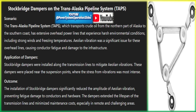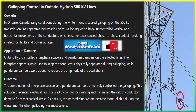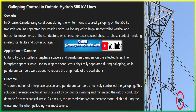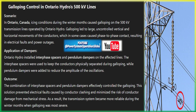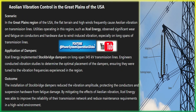Dampers help to extend the lifespan of conductors, clamps, insulators, and other line hardware by preventing wear and tear from vibrations. This reduces the frequency and cost of maintenance, as fewer conductor repairs or replacements are needed. By minimizing conductor motion, dampers also reduce the risk of faults caused by mechanical wear, breakage, or short circuits — particularly in galloping situations — increasing the overall reliability of the transmission system.